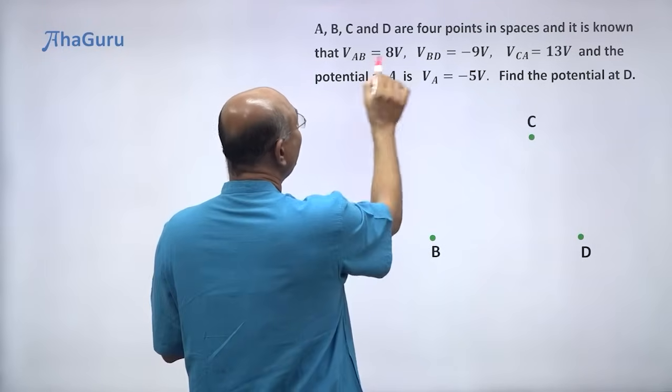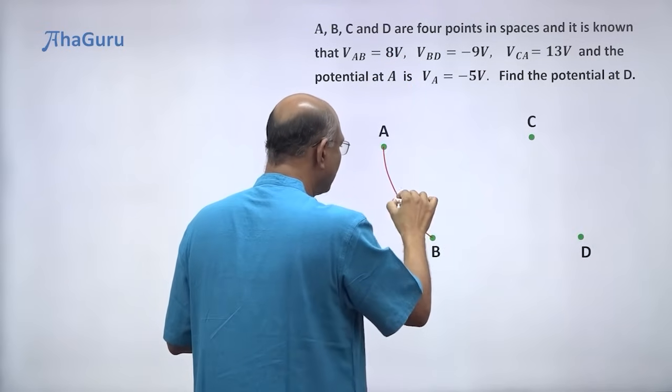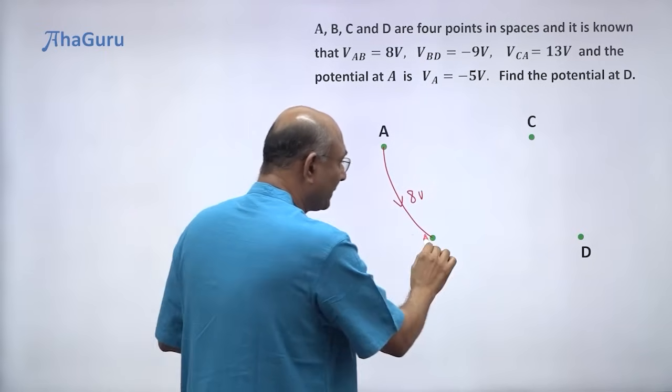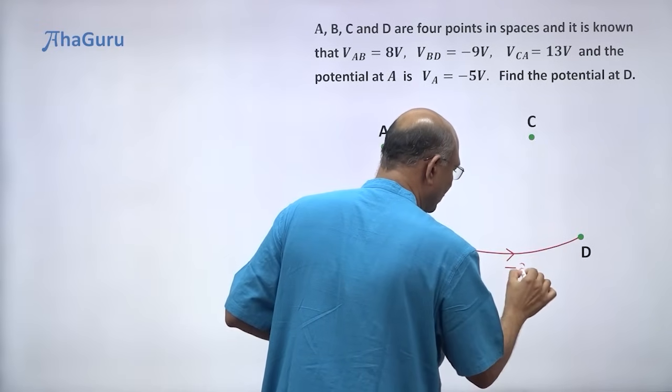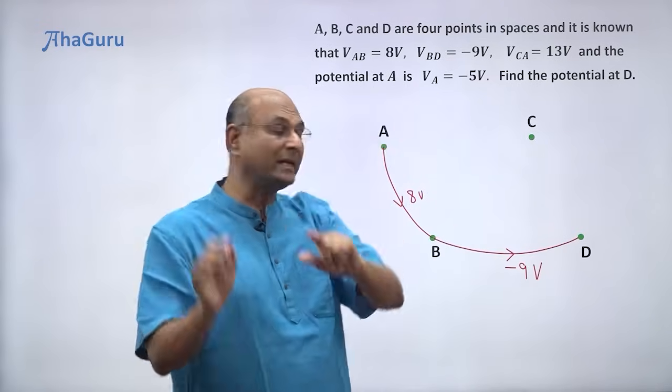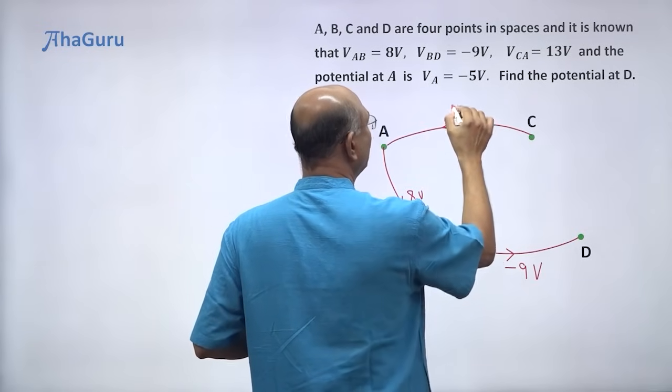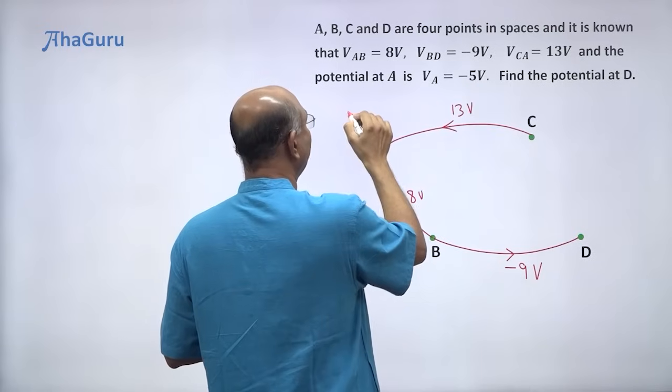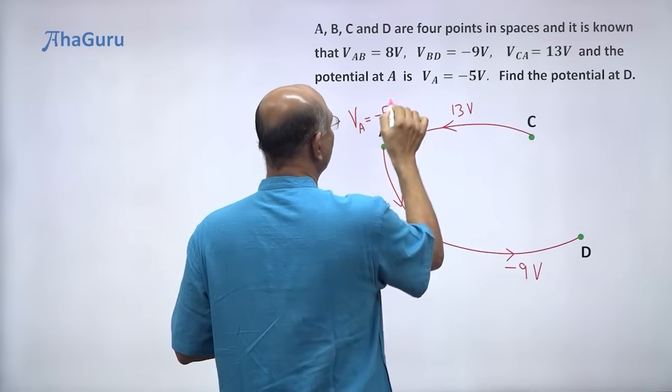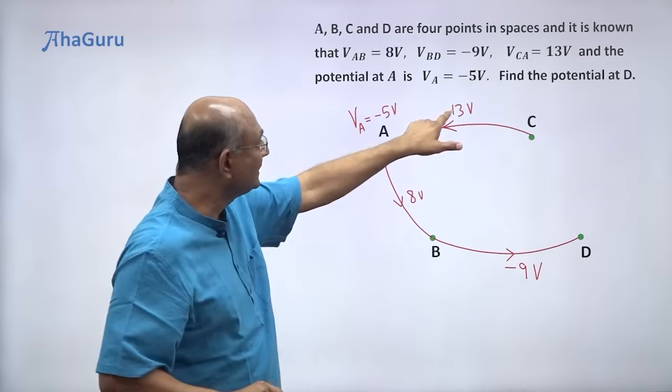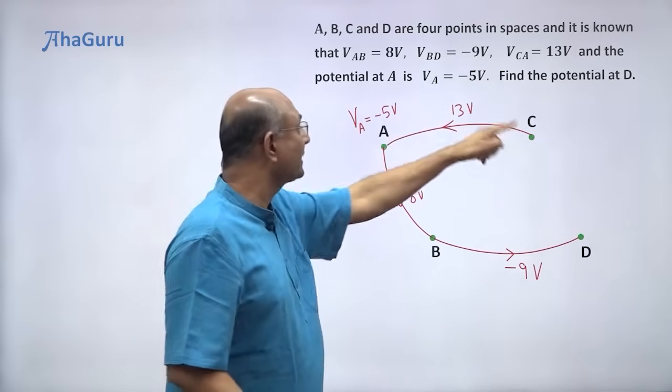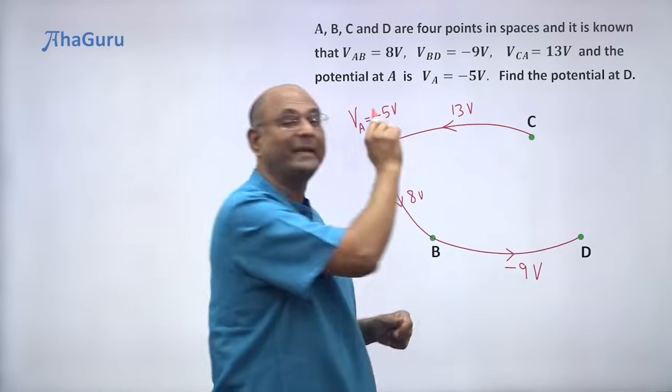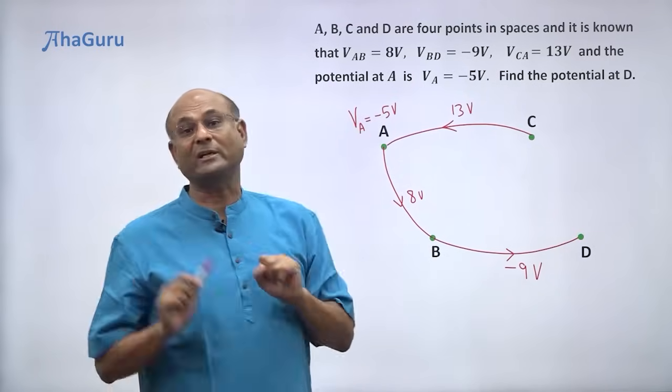So A, B, C, D, they are the four points in space. V_AB is 8 volts. So if I go from A to B, the drop is 8 volts. V_BD is minus 9 volts. So from B to D, the drop is minus 9 volts. V_CA is 13 volts. So from C to A, it is 13 volts. And the potential at A is given. The potential at A is minus 5 volts. So V_A is minus 5 volts. I want you to keep in mind that this is the potential at that point. These are not potentials at a point. These are potential drops from that point to this point. These are potential drops, whereas this is the potential at A.